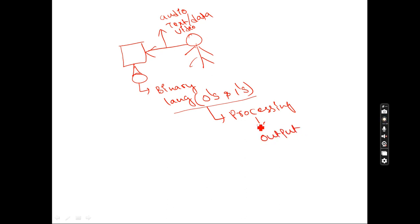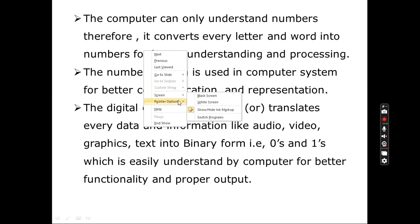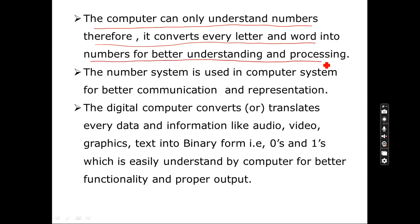Once the computer understands any information in the form of binary numbers, it will start processing, and finally it will generate the output. So for better processing, the data has to be converted into binary format. The number system helps us to convert any type of data — text, word, or phrase — into binary language. The computer can only understand numbers, therefore we convert each and every letter and word into numbers for better understanding and processing.